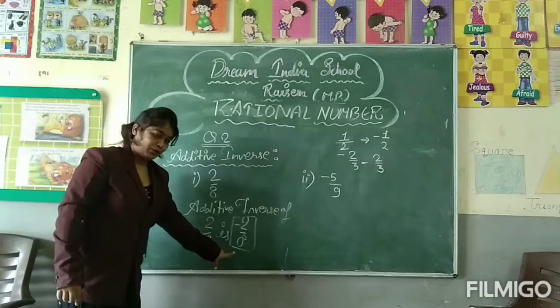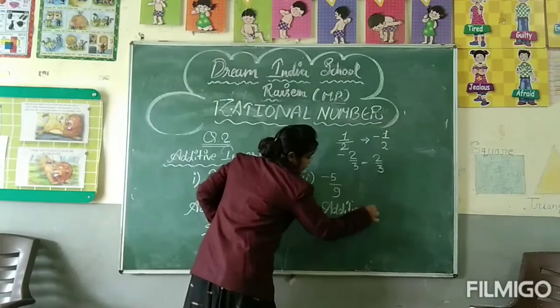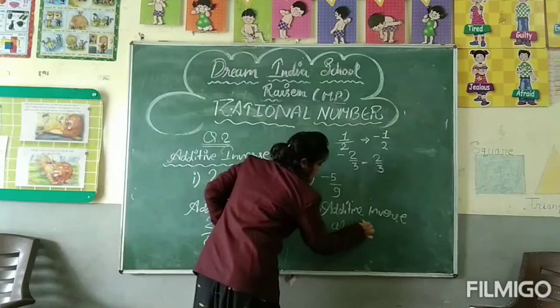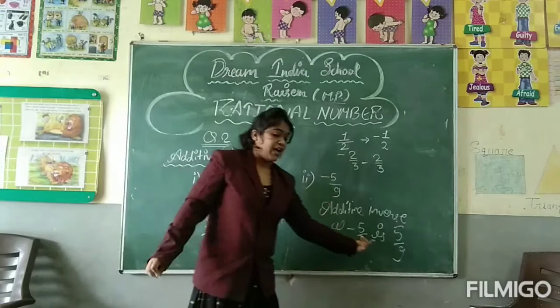Next is minus 5 upon 9. Additive inverse of minus 5 upon 9 is positive 5 upon 9, because the given number is in the form of negative, so it is changed into positive. Thank you so much.